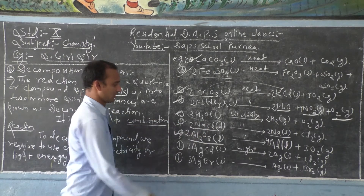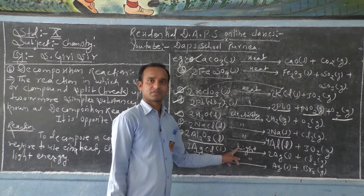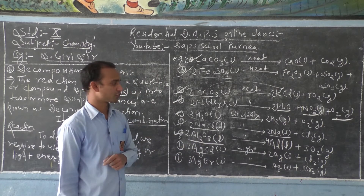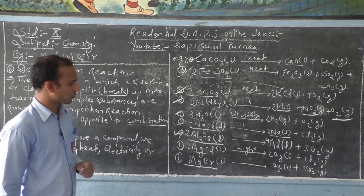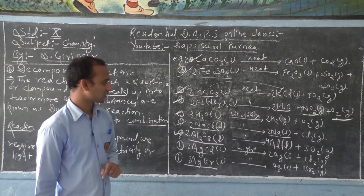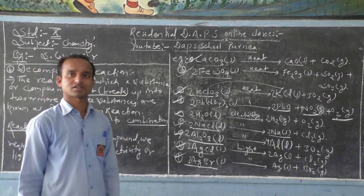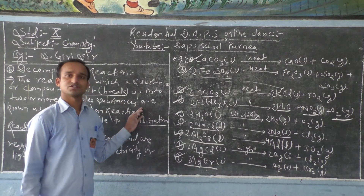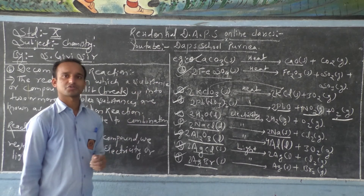Similarly, when you take silver chloride (AgCl) and supply light energy to this compound, it breaks into silver (Ag) and chlorine gas (Cl2). Similarly, when you take silver bromide (AgBr) and expose it to light, it also breaks into its constituent particles: silver and bromine. From here we can conclude that decomposition reactions are just opposite to combination reactions — using heat, electricity, or light energy, we can decompose a compound into its respective constituent substances.